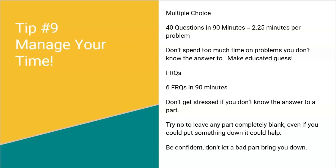Manage your time — this is really important. Multiple choice is first: you have 40 questions in 90 minutes, which is 2.25 minutes per problem — that's actually a ton of time. About 25 questions will be quick, either you know the answer or it takes one math step. Around 15 questions will require multiple steps and real thinking. Don't set a timer for exactly 2.25 minutes each; just make sure if you're spending five, six, seven minutes on a problem, move on.